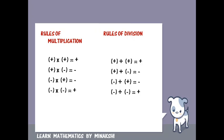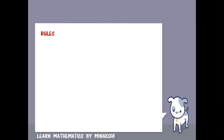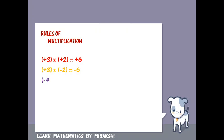Here you observe one thing: the rules of multiplication and division are the same. Next we will see the rules of multiplication by putting in values. Plus 3 into plus 2 gives plus 6. Plus 3 into minus 2 gives minus 6. Minus 4 into minus 5 gives minus 20. Minus 4 into minus 3 gives plus 12.